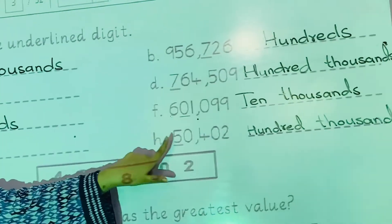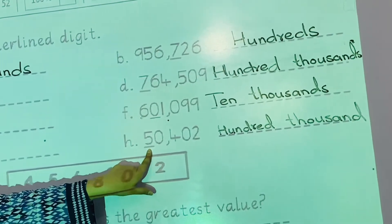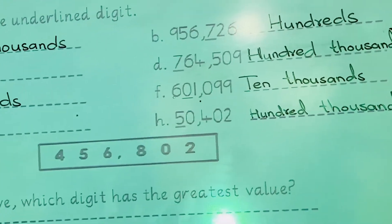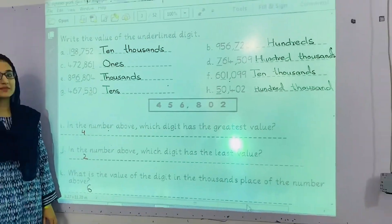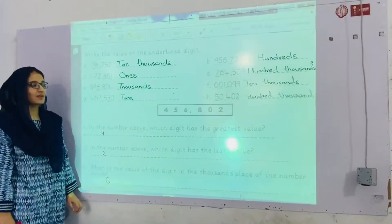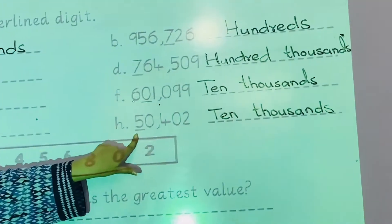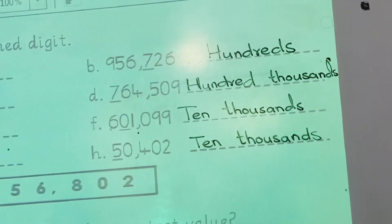In the last one, the place value of five is hundred thousands. In the last one, the place value of five is tens.